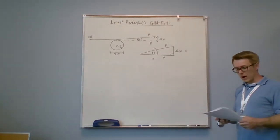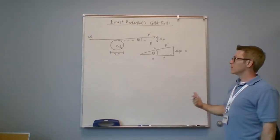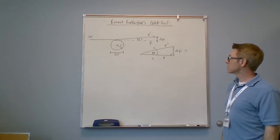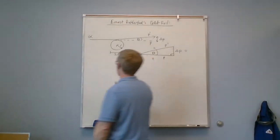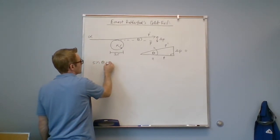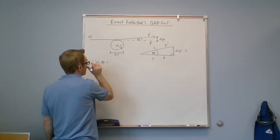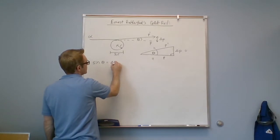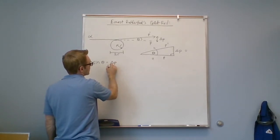We know from trigonometry that sine theta is the opposite over the hypotenuse, which is delta P over P prime.